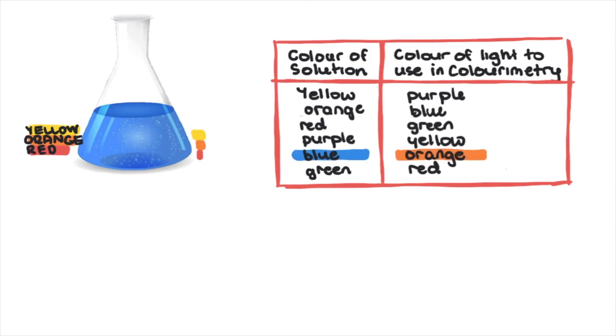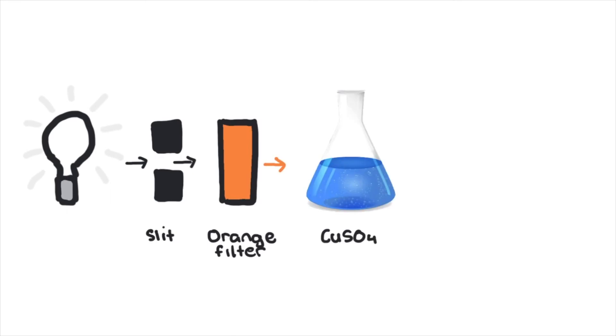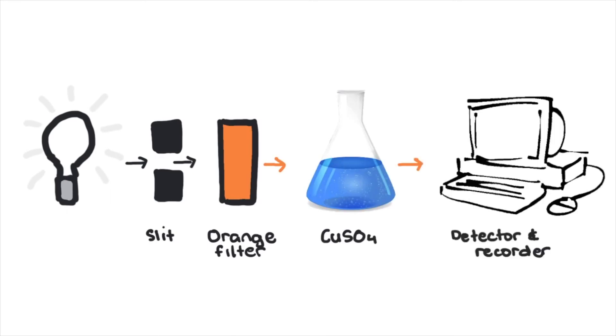Check this setup: white light is passed through a slit and the complementary color is selected using an orange filter. If you have the money, you can digitally select the wavelength. Some of the orange light is absorbed by our blue copper sulfate and is measured and recorded as the absorbance.